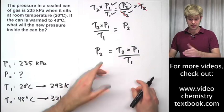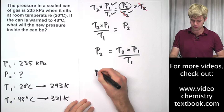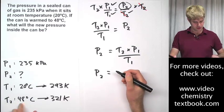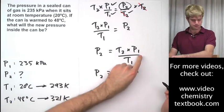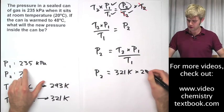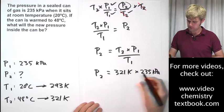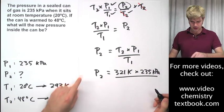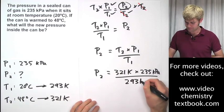So there we go. Now P2 is by itself and we're ready to plug in the variables. So P2 equals T2, 321 Kelvin times P1, 235 kilopascals divided by T1 which is 293 Kelvin.